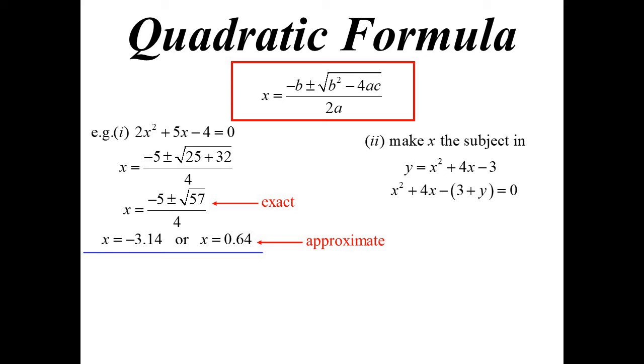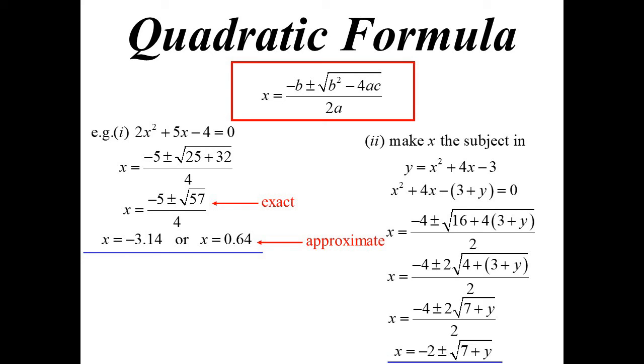Y, as far as we're concerned, is just a number. So x equals negative b, plus or minus square root of... But we've got a common factor there of 4, and we know the square root of 4. And now 2 goes into everything. So we get negative 4 plus or minus... Oh no, hang on. 2 will cancel. There it is. X is negative 2, plus or minus the square root of 7 plus y.